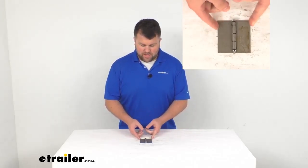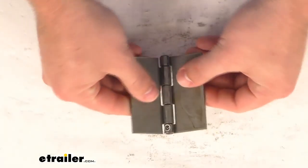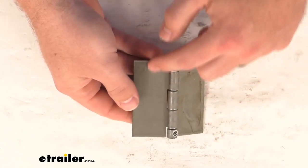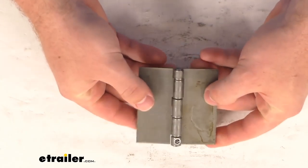Hi there, I'm Michael with etrailer.com. Today we're going to take a quick look at this steel butt hinge. This is a nice durable steel hinge with an unplated mill finish. This will either weld on or bolt on to allow you to support your cabinet door or panel.